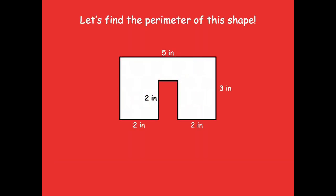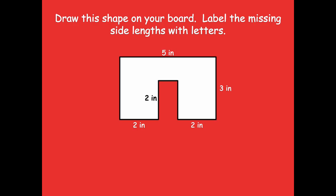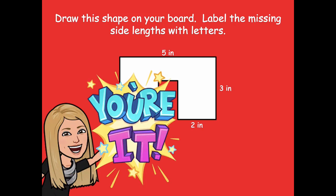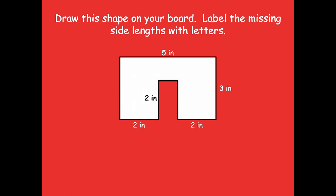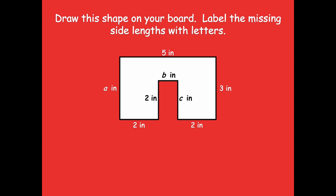Let's find the perimeter of this new shape. Draw this shape on your board and label the missing side lengths with letters. This doesn't have to be exact — just similar to my drawing. Don't solve it yet, just draw the shape and label the missing sides with letters. The missing sides are: this side labeled A inches, this part labeled B inches, and this side labeled C inches. You should have three unknown side lengths.